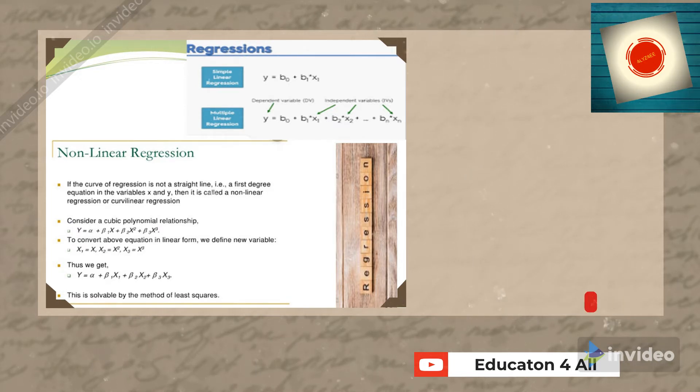Non-linear regression: if the curve of a regression is not a straight line, it is called non-linear regression. If the regression curve is a straight line with a first-degree equation in variables x and y, it is called linear regression.